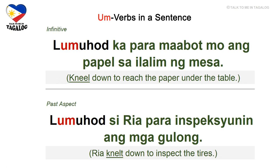Past aspect: lumuhod si Ria para inspectionin ang mga gulong. Lumuhod means knelt down, inspectionin is to inspect, and mga gulong means tires — Ria knelt down to inspect the tires.